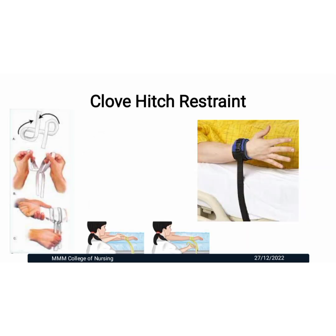Clover restraint: in this, a loose knot will be prepared over the wrist or ankle. The bony prominence will be padded adequately, and this knot will be applied over the padded area. This will be secured along with the cot, not over the side rails.